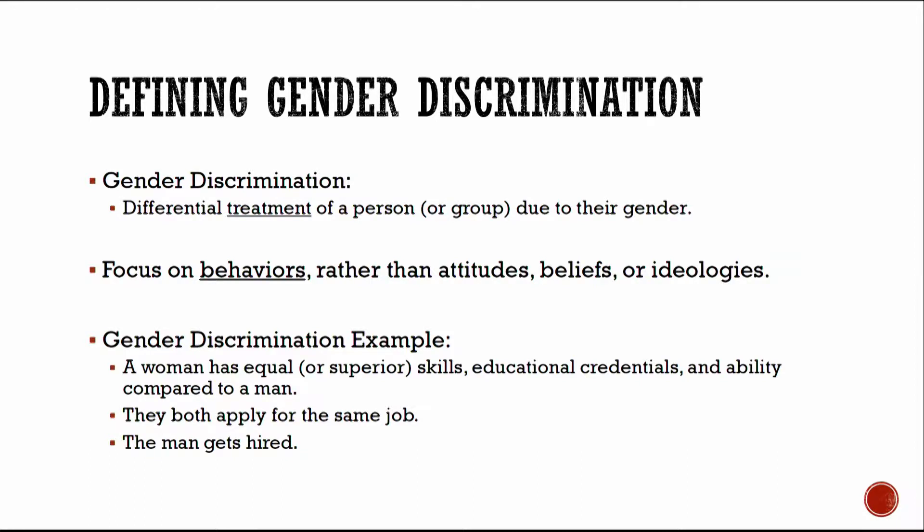As a concrete example: imagine that a woman has equal or even superior skills, educational credentials, and ability compared to a man. They both apply for the same job, and the man gets hired. This is an example of gender discrimination. If we see this emerge across organizational contexts and time and space, we have strong evidence that gender discrimination is at play. My talk today will focus on gender discrimination; I won't talk much about race and ethnicity, but I'd be happy to discuss racial discrimination in hiring during the Q&A.